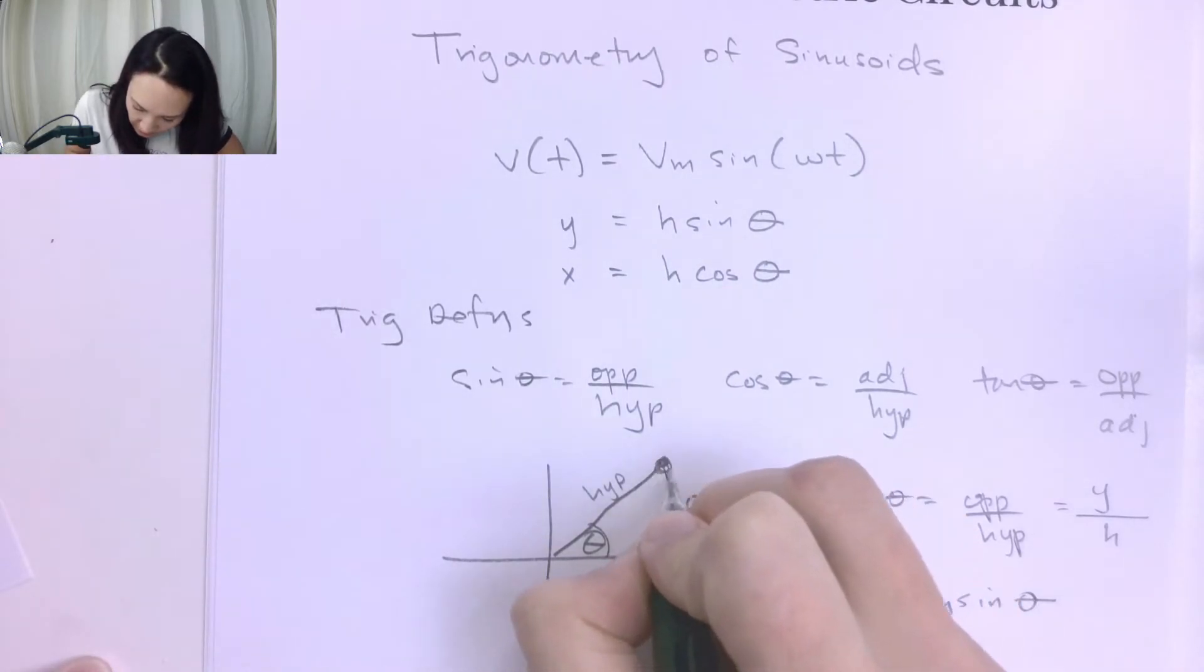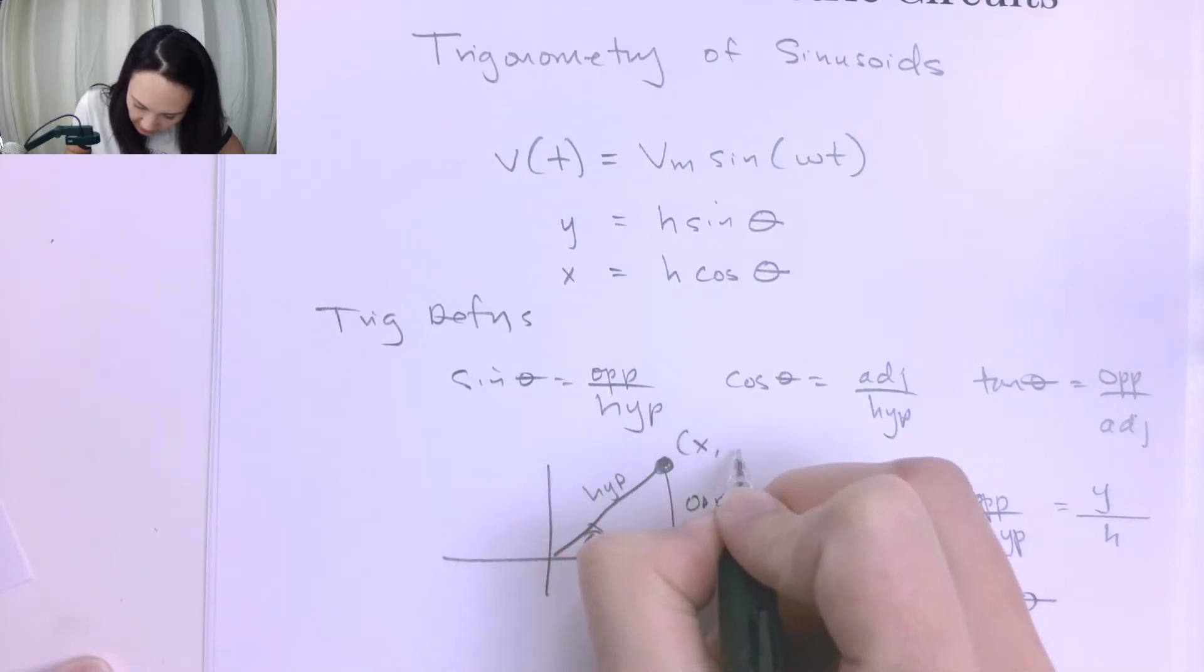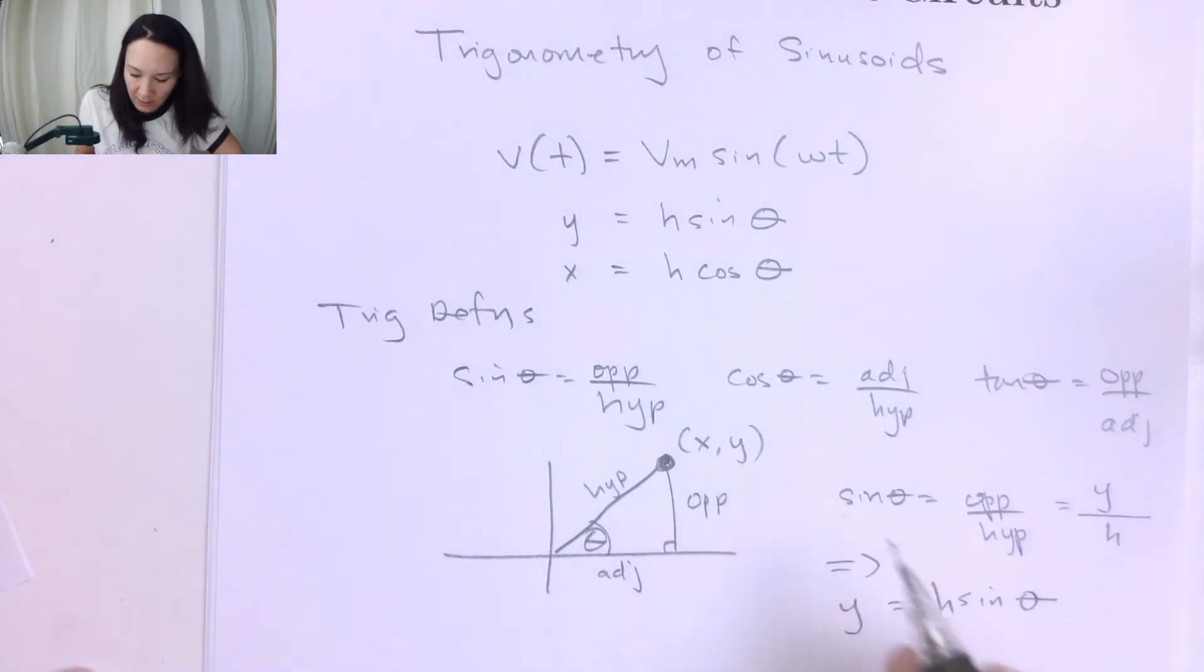So if we imagine that this point right here has an X coordinate and a Y coordinate, the way we get that Y coordinate is by multiplying the hypotenuse times the sine of this angle.